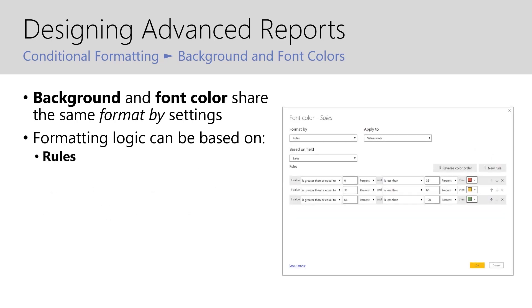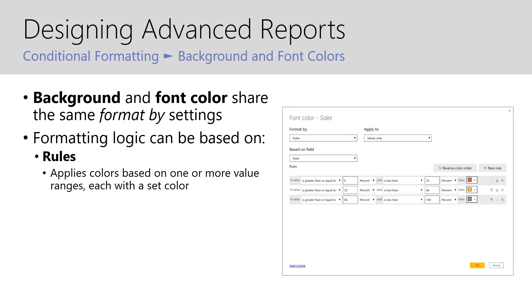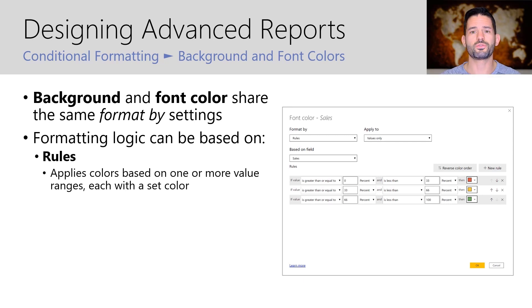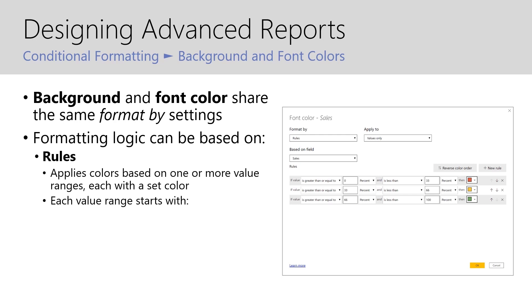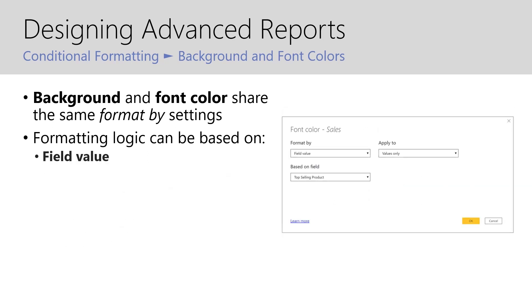Formatting logic can also be based on rules, which will apply colors based on one or more value ranges, each with a set color. This logic follows very similarly to the logic in a CASE WHEN statement in SQL or a SWITCH TRUE in DAX. Essentially, it checks these one at a time in sequential order — each value range starts with an if condition, continues into an and-value condition, and then supplies a color if that condition is found to be true.